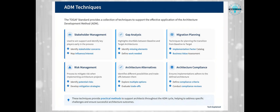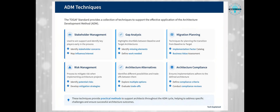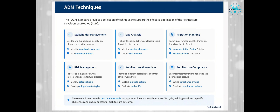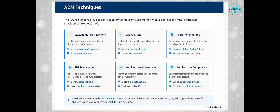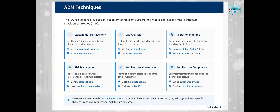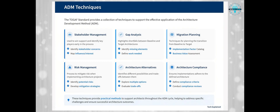Migration planning techniques include several tools to help you plan the transition from baseline to target architecture. These include the Implementation Factor Catalog, Consolidated Gaps Solutions and Dependencies Matrix, Architecture Definition Increments Table, Transition Architecture State Evolution Table, and Business Value Assessment Matrix. These might sound complex, but they're essentially just structured ways to think about and plan your migration.